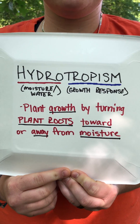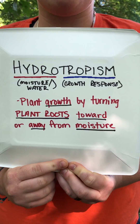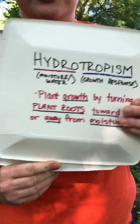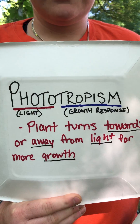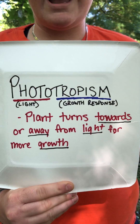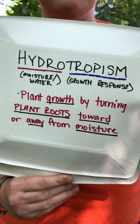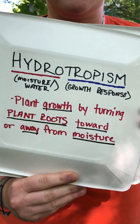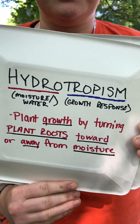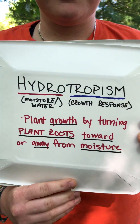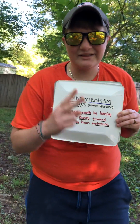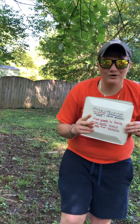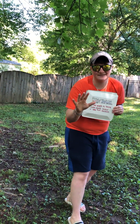So we've got two tropisms down now. We've got phototropism, which is light, and we've got hydrotropism, which is water and moisture. Alright guys, I love you. Have a good one. Stay safe. I'll see you next time.